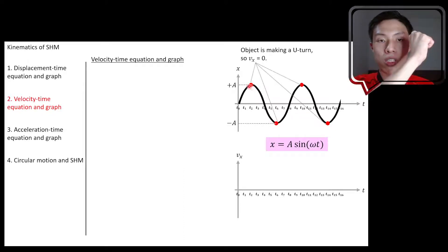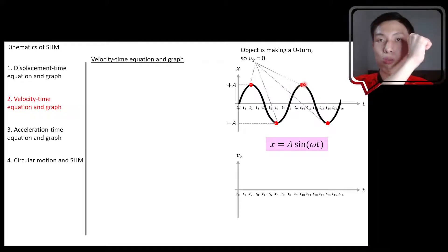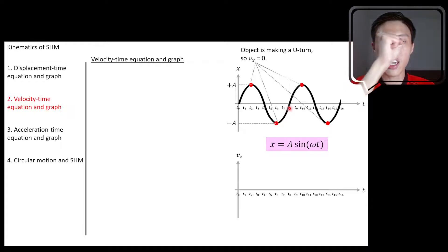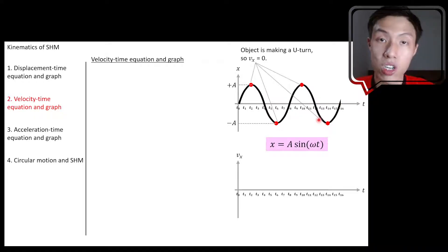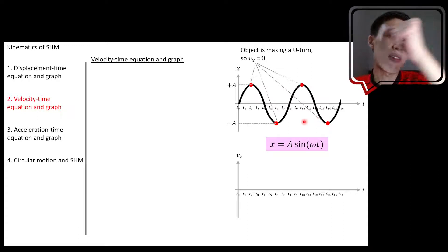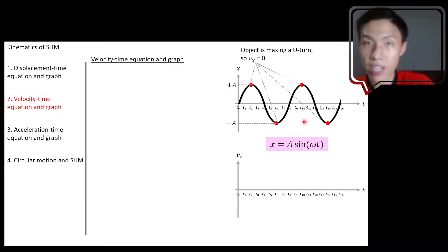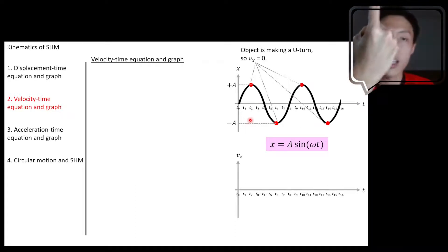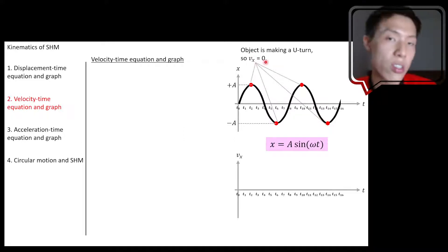At the other red dots, you can also see the object moves from positive A to negative A, makes a change in direction, then moves back towards positive A. And once it travels from negative A to positive A, it makes another change in direction back towards negative A. These four points represent where the object changes direction. From Chapter 2, kinematics, we know that if an object changes direction to the opposite direction — left to right or right to left — the velocity must equal zero at that moment. So at these four U-turn points, velocity equals zero.